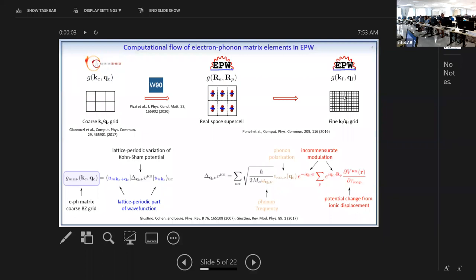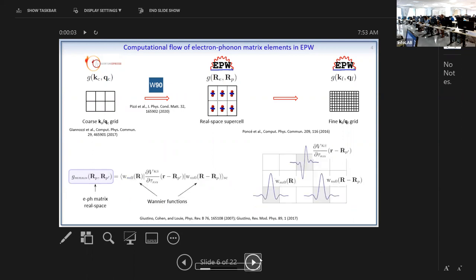The deformation potential is calculated with density functional perturbation theory in Quantum Espresso, and it involves the displacement of every atom in the unit cell according to a phonon frequency. The good thing about DFPT is that you don't need to use supercells, as you would in the frozen phonon approach. You can do all the calculations in the unit cell because we have this phonon modulation.